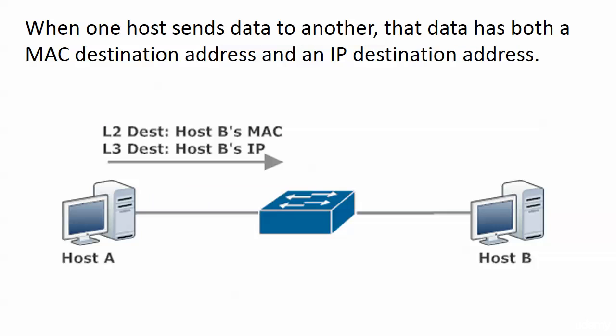A quick reminder here, since we've been spending so much time with MAC addresses up to this point and for good reason: when one host sends data to another, that data has two destination addresses. It has a MAC destination address and an IP destination address — a layer 2 destination and a layer 3 destination. Up to this point, we've been working with layer 2 destination addresses as opposed to layer 3 destination.